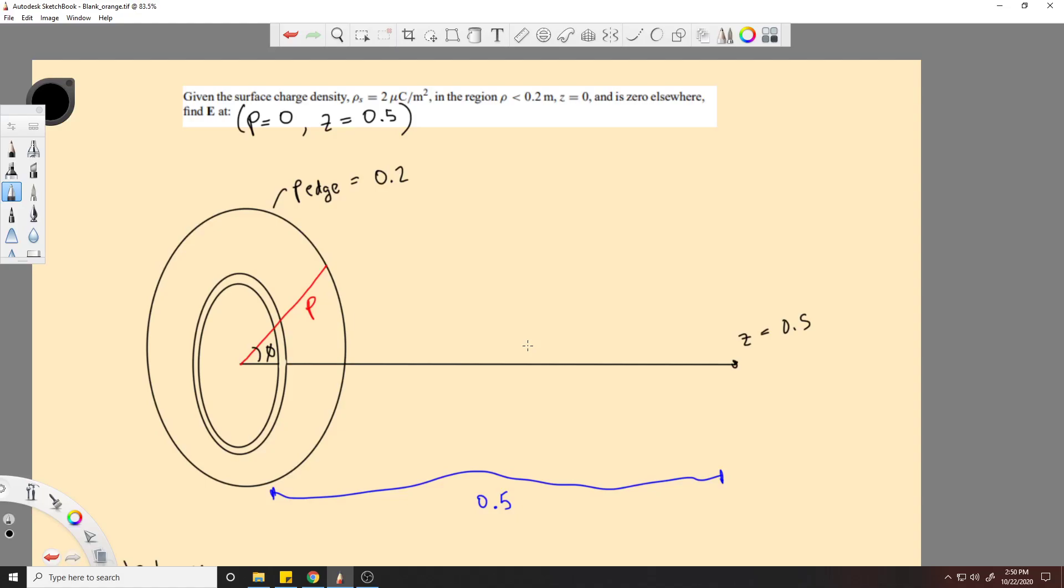All right, so we have a point Z over here, and we want to know the surface charge density. We want to know the electric field at this point, and we have a whole disk of charge, essentially.